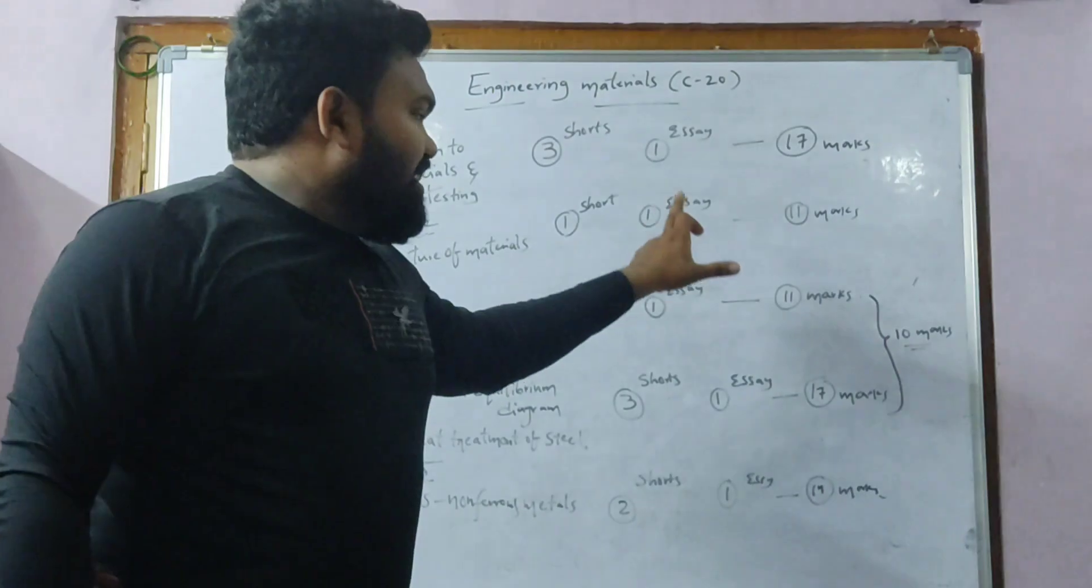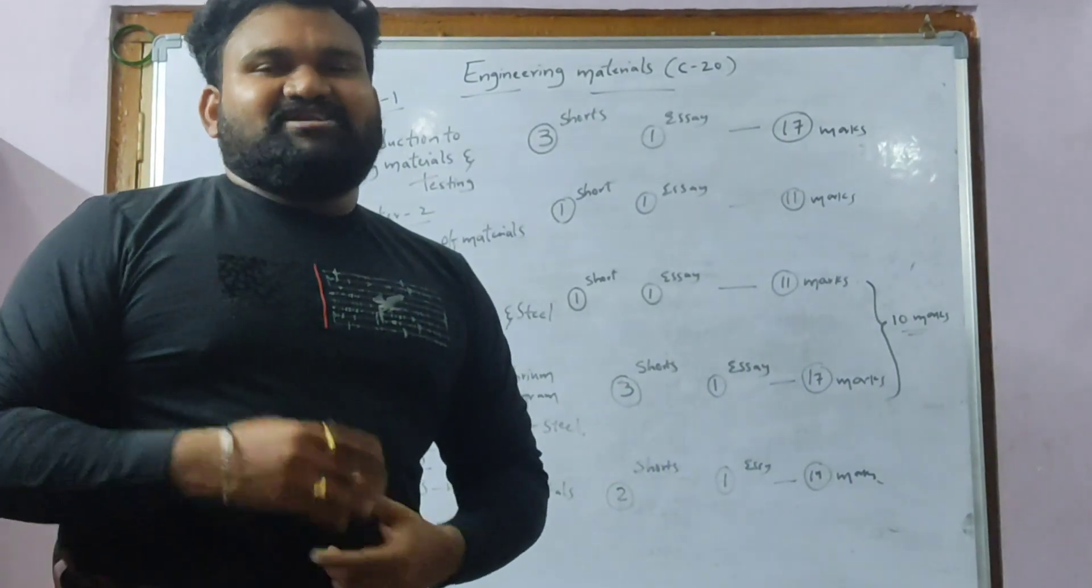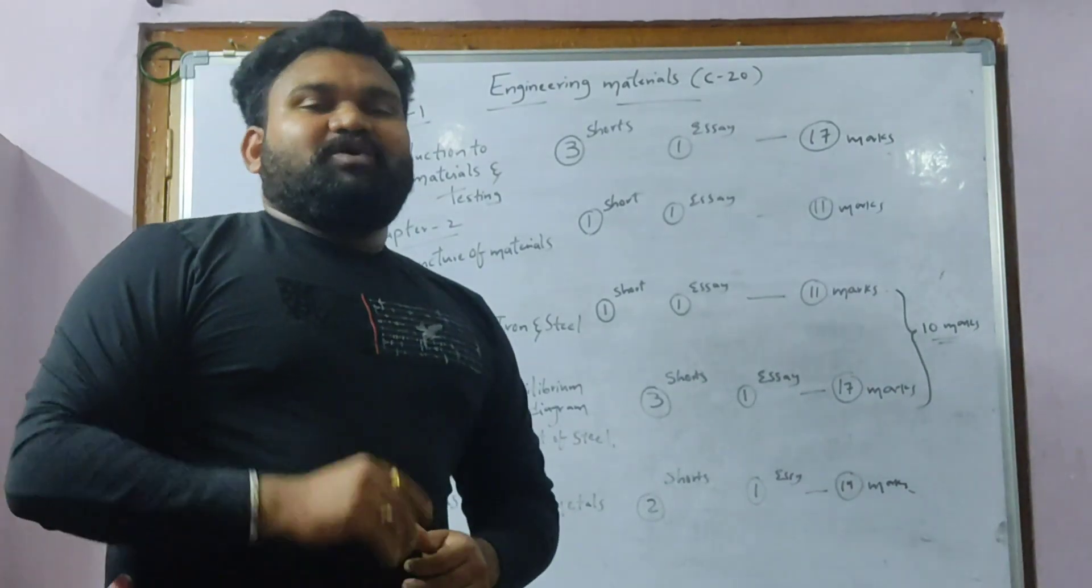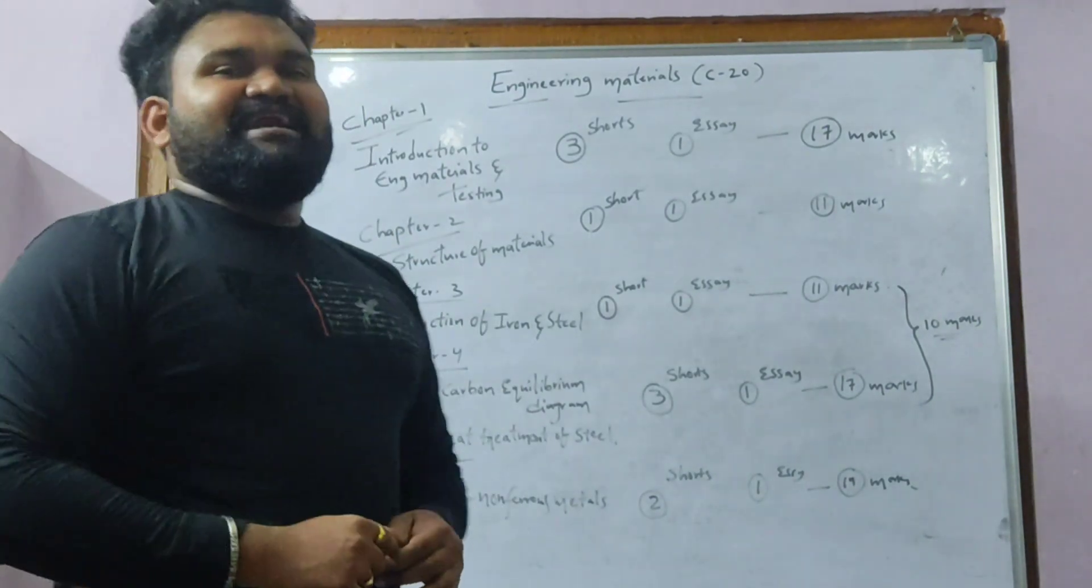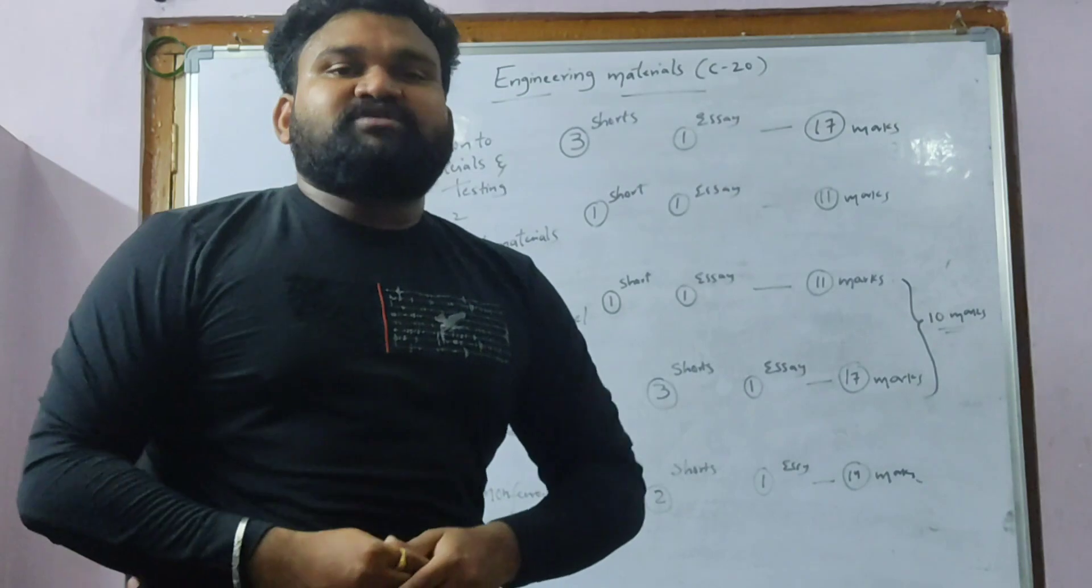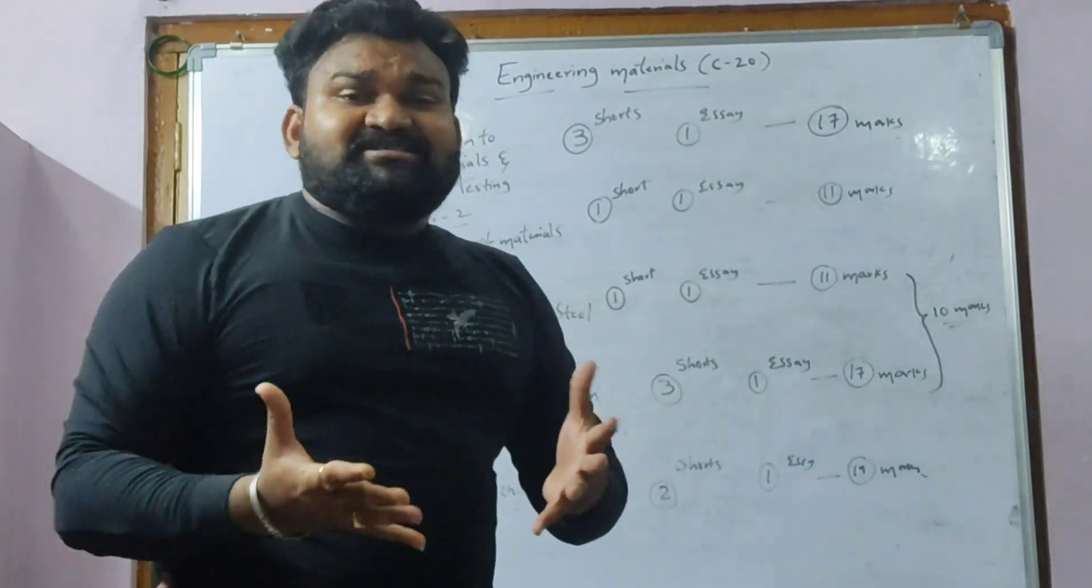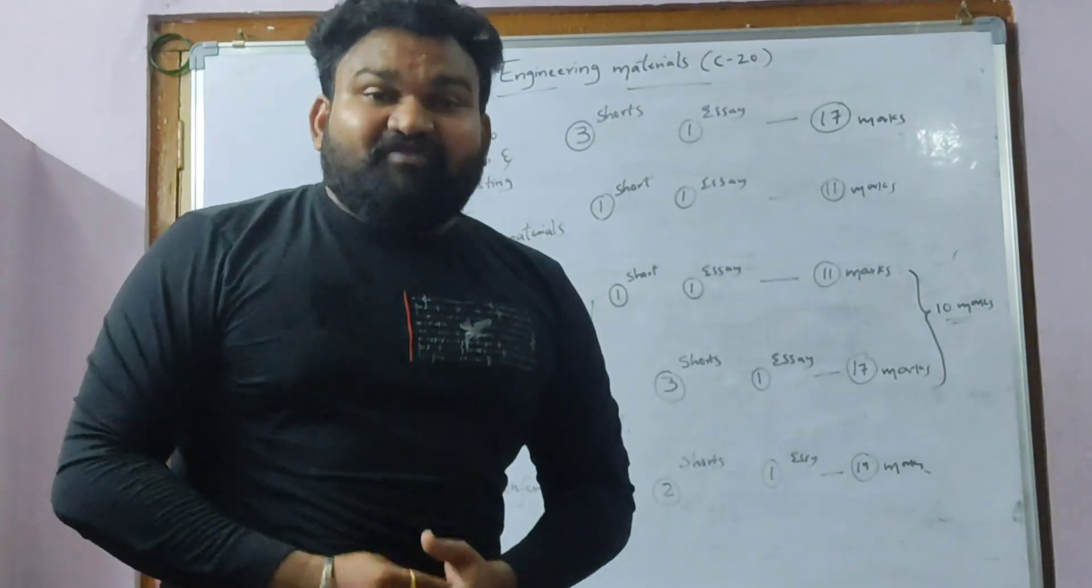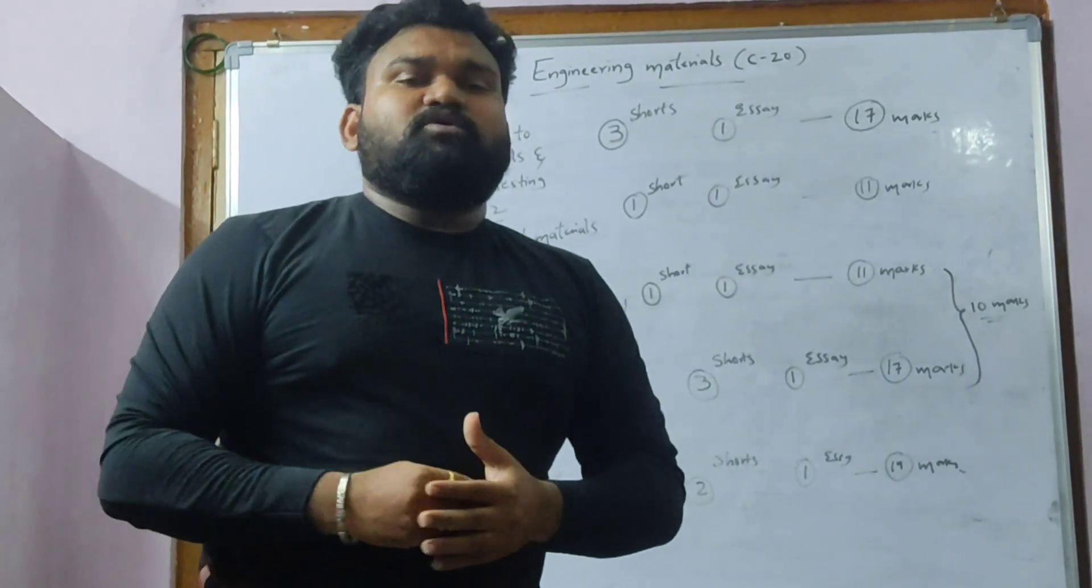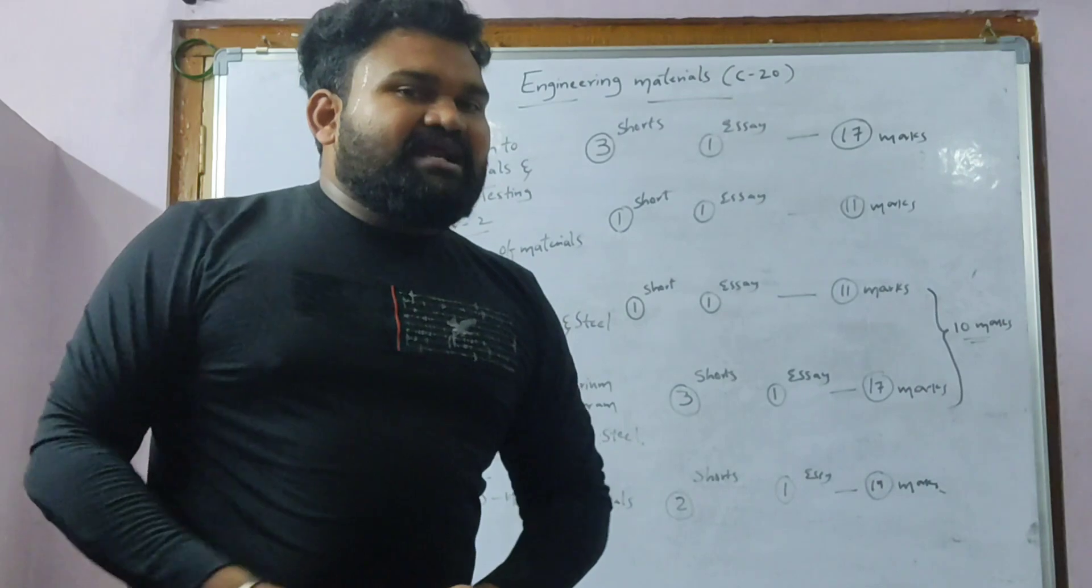Coming to the iron carbon equilibrium diagram and heat treatment of steel. What is iron carbon equilibrium diagram? What is the importance of 732°C, what is the importance of 910°C, what is the importance of 1410°C, and what is the importance of 1539°C? What is austenite, what is pearlite, what is ferrite, what is cementite, what is ledeburite? What is eutectoid steel, what is hypoeutectoid steel, what is hypereutectoid steel? What is alpha iron, what is beta iron, what is gamma iron? We need to concentrate on the iron carbon equilibrium diagram.